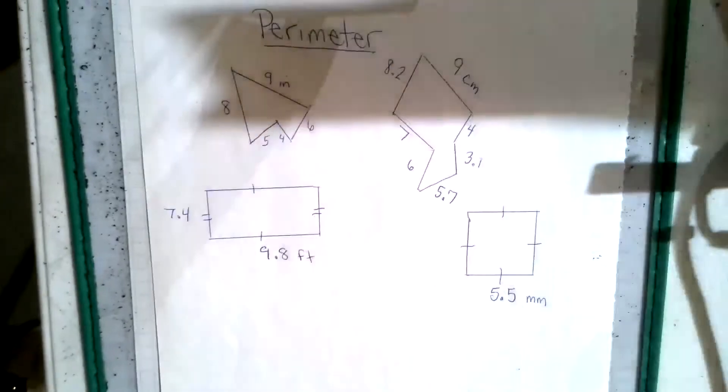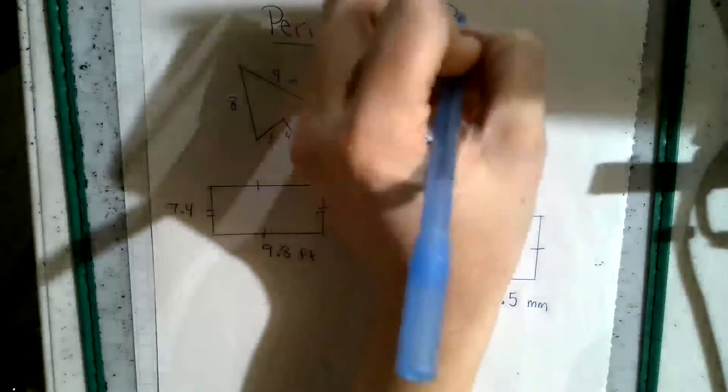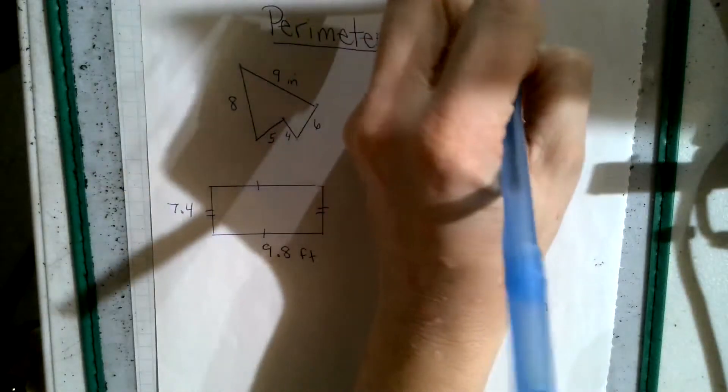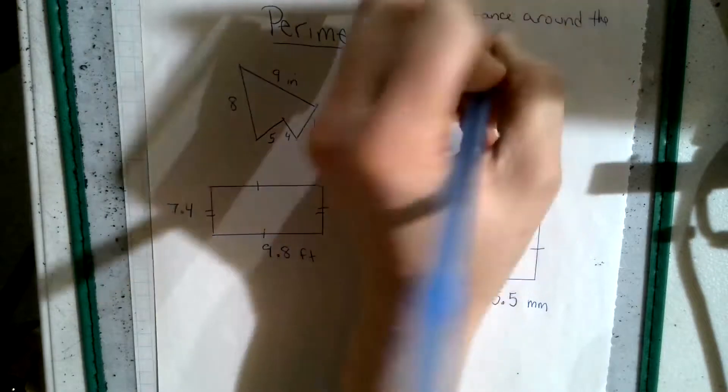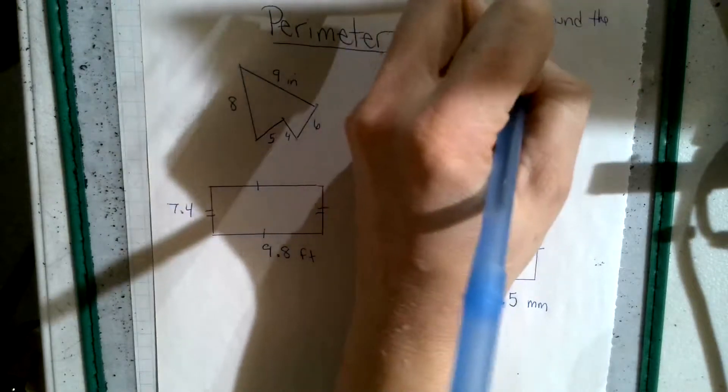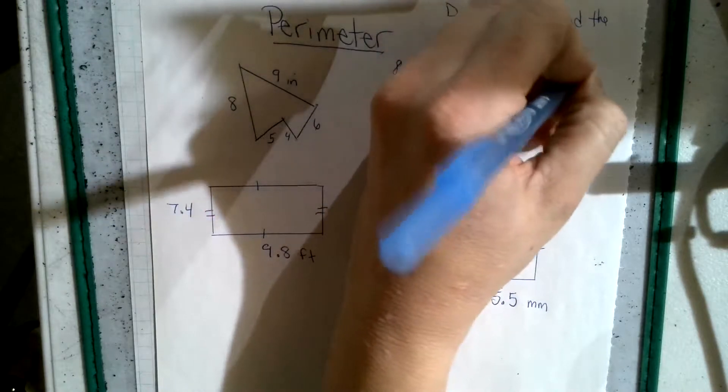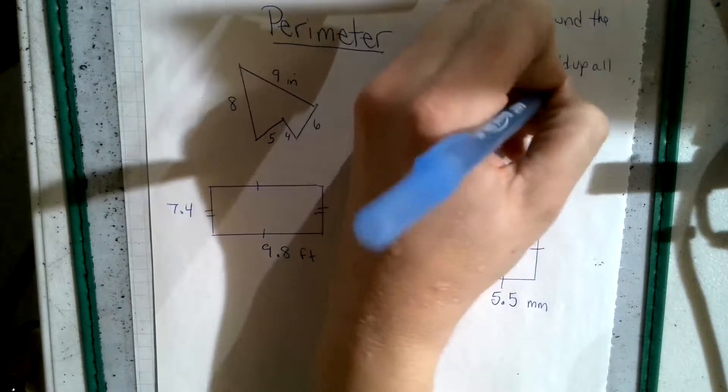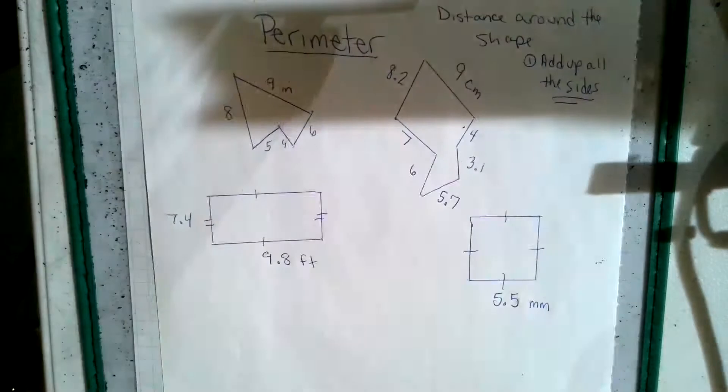Hello! So we're going to do some work with perimeter. Perimeter is the distance around the shape. You always add, add up all the sides. Easiest way to do it.